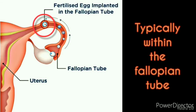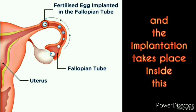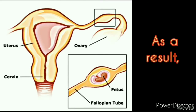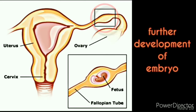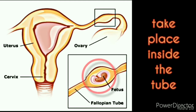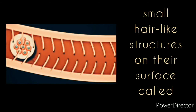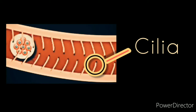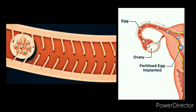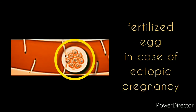Typically the egg becomes stuck within the fallopian tube, and implantation takes place inside it. As a result, the further development of the embryo and fetus takes place inside the tube. The luminal cells of the fallopian tube have small hair-like structures on their surface called cilia. By the ciliary movement of these hair-like structures, a flow is created from the ovary to the uterus, carrying the egg along. A reduction in the number of cilia inside the fallopian tube may slow down the transport of the fertilized egg, contributing to ectopic pregnancy.